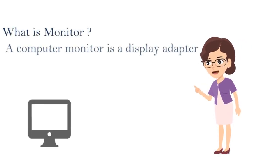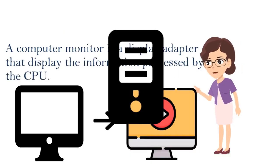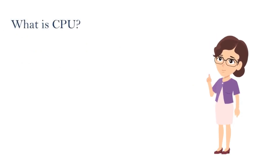Number one: Monitor. A computer monitor is a display adapter that displays the information processed by the CPU.